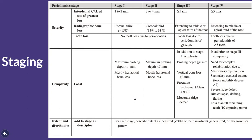In the staging flowchart, we assess severity, complexity, extent, and distribution. For severity and complexity, we depend on the interdental clinical attachment loss at the site of greatest loss, radiographic bone loss, and partly on tooth loss. In Stage 1, we have 1–2 mm attachment loss and less than 15% bone loss. There is no tooth loss due to periodontitis in Stage 1.